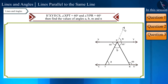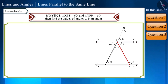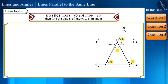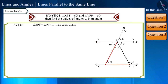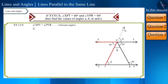Let's move ahead and see one more question. In the figure, if line XY and CS are parallel, angle XPT equals 60 degrees, and angle YPR equals 60 degrees, then find the measure of angles A, B, M, and N. Look at the figure carefully — angle XPT and angle PTR are alternate angles, so both of them will be equal.